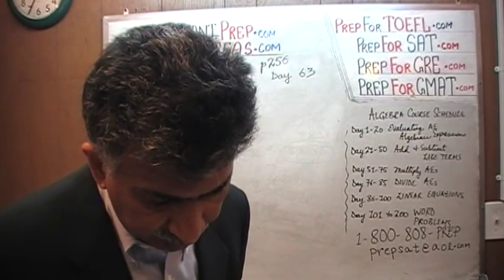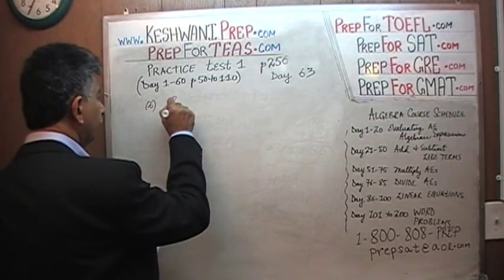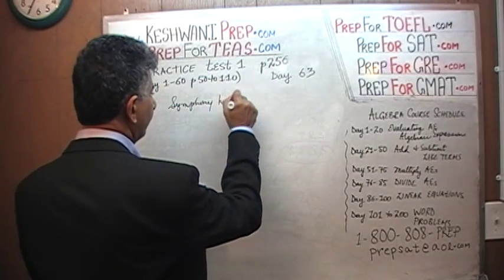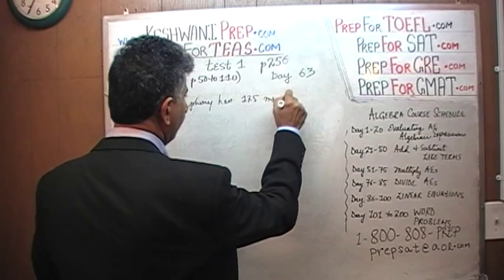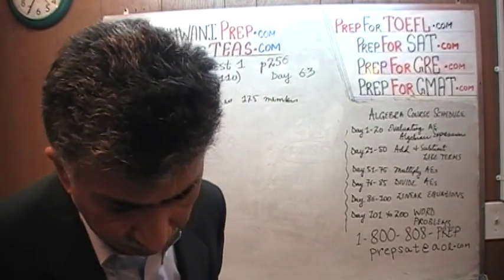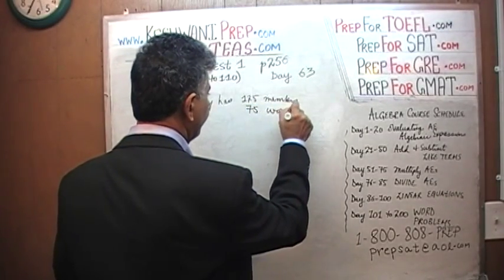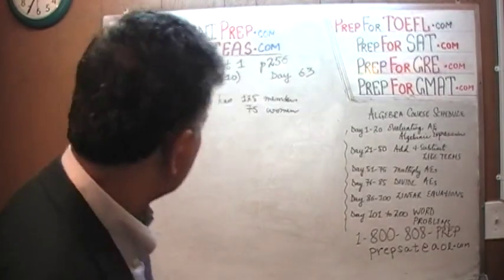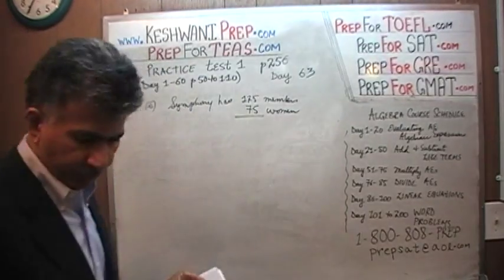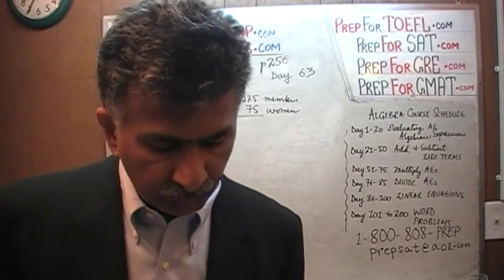Number 6. A symphony has 125 musicians. So we have a symphony in number 6 and we are told it has 125 members. They go on to tell us that 75 of them are women. So 75 of them are women. And what is the question asking? Which of the following is the ratio of men to the total musicians in the symphony?